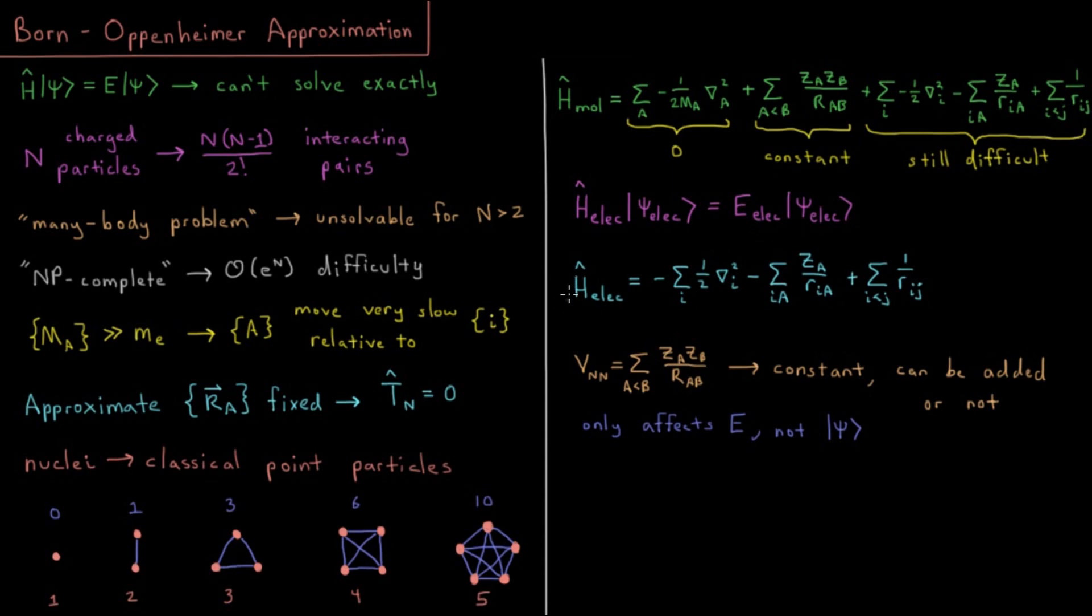Just for good measure indicating what our electronic Hamiltonian is, sum over all electrons of their kinetic energy, one-half del squared i, Laplacian operator, minus its attraction, so it's a negative sign, sum over all electron nuclear pairs, charge of the nucleus divided by the distance between the electron and the nucleus, and then plus, because it's a repulsion term, sum over all pairs of electrons of one over their distance apart, the magnitude in which electrons repel one another.